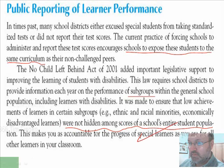No Child Left Behind created some real problems for President Bush, but it added important legislation to support improving learning for students with disabilities. This law requires school districts to provide annual information on the performance of subgroups — the federal group felt that we had been underreporting these subgroups within the general population. It ensured that low achievement of learners in subgroups — including those with disabilities, ethnic and racial minorities, and economically disadvantaged learners — was not hidden among school-wide scores, making us accountable for the progress of special learners as we are for all others.